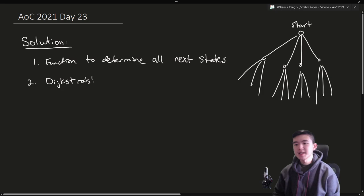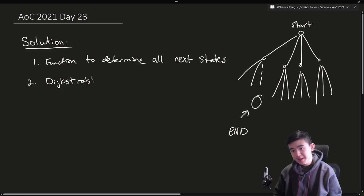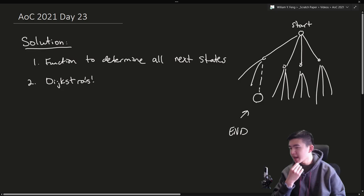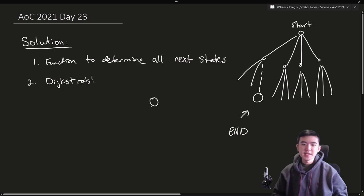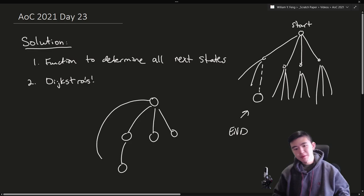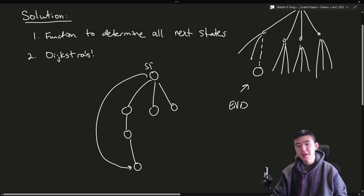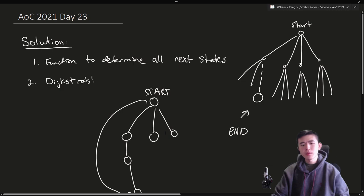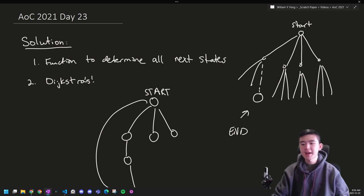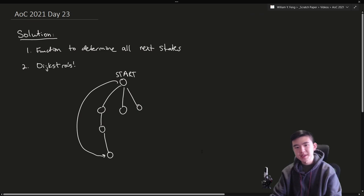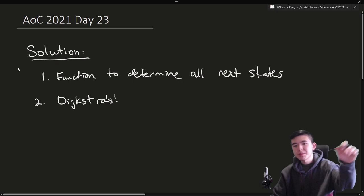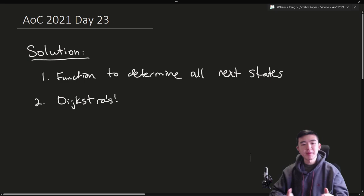There might be some intermediate states as well. We can't just search the entire tree because there are also going to be cycles. For example, we could go directly from the start to a state that could also be reached through two other intermediate states. For this reason, we have a graph instead of a tree, which means we're going to have to use a graph-searching algorithm such as Dijkstra's. I explained Dijkstra's in an earlier Advent of Code video — I'll link to that above and there will also be a link in the description.